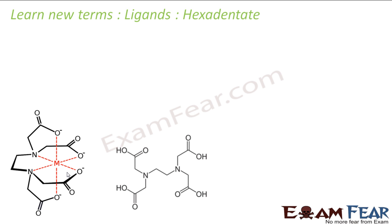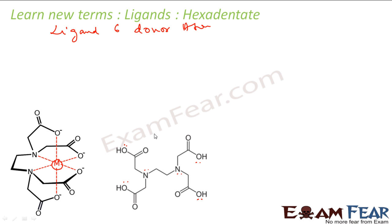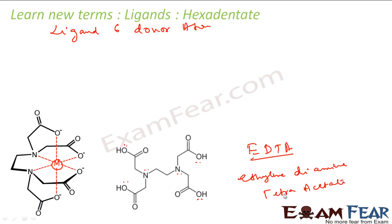Similarly, we have hexadentate ligands, where the ligand has six donor atoms. For example, there is a metal and one whole ligand around it. Counting the atoms that can donate electrons: oxygen, oxygen, oxygen, oxygen, nitrogen — one, two, three, four, five, six. There are six donor atoms. This is called EDTA — ethylene diamine tetraacetate. Remember this name; it is also used for purification of water. When a ligand has six sites to donate electrons, it is called hexadentate.